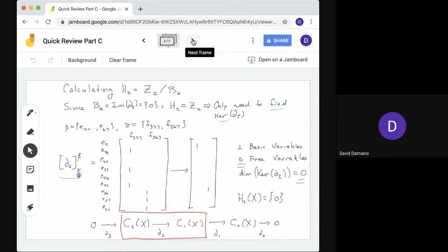We'll do it with respect to the basis. So here it was gamma and beta on the left. Notice that gamma is the basis for the two chains. Beta is the basis for the one chains. If we look at our matrix, we see the columns are indexed by the faces. F3, 4, 7, and 5, 6, 7 in the order we chose. Rows are indexed by the edges, again using the order we chose.